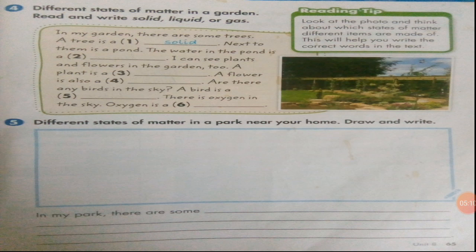In my park there are some — now you have to describe your park with all three states of matter. Draw a scene of a park or garden, observe your surroundings if needed, and show all three states of matter. Then describe your park: write some examples of solids, liquids, and gases found in the park.